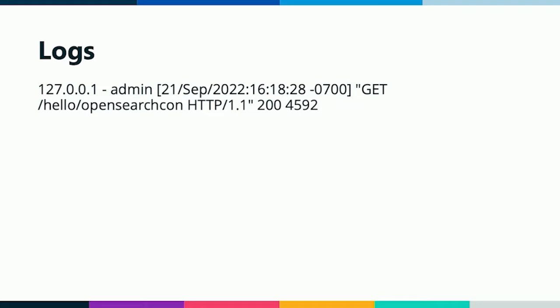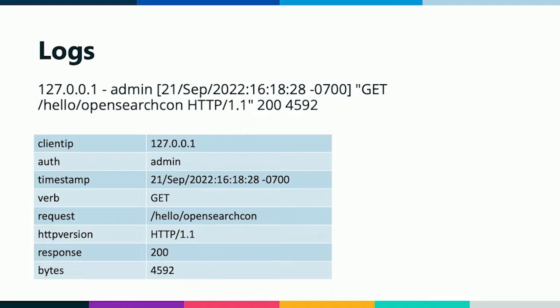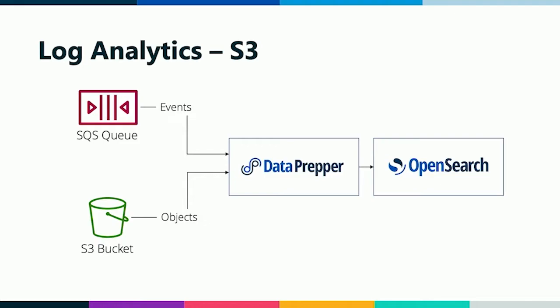When a log line gets into Data Prepper, it's probably going to look like raw text — you can guess there's some useful information in there, but you can't really know what it is. The first thing in your log pipeline is almost certainly always going to be a Grok processor. That allows you to configure what that log line means and extract useful data out of it. Now that you've got this useful data in fields, you can send that straight to OpenSearch — a huge improvement over just sending raw log lines — or you can start to use this for aggregations.